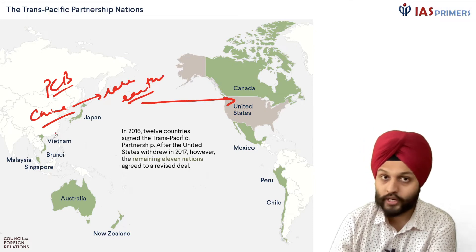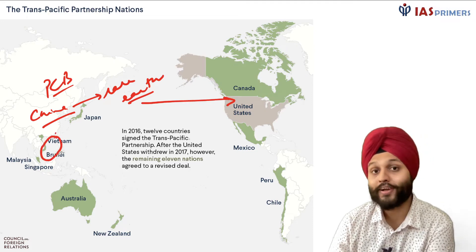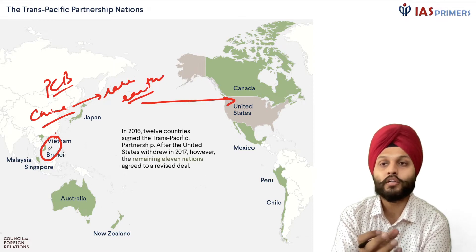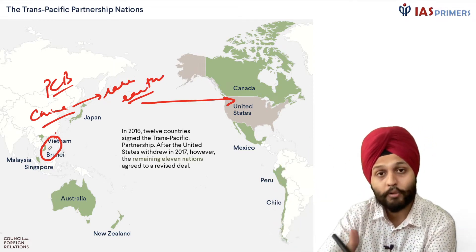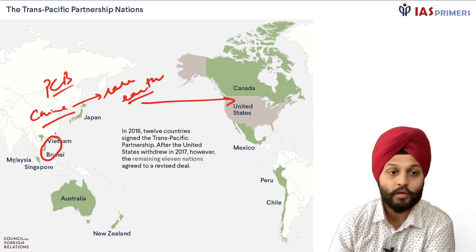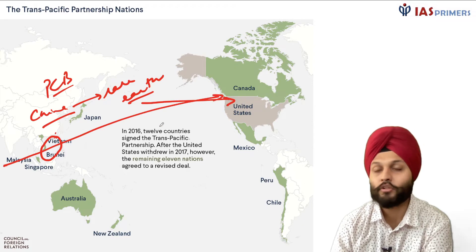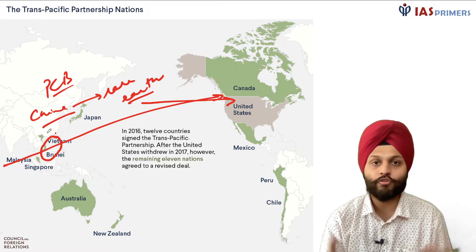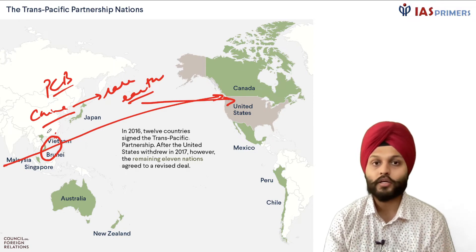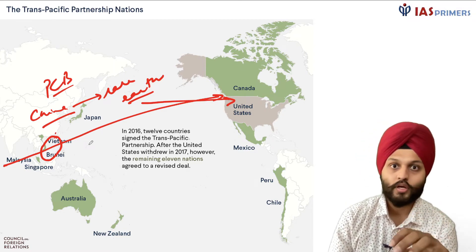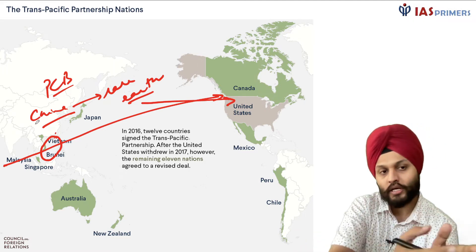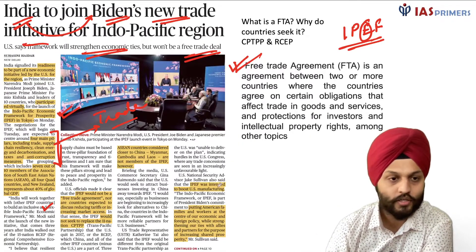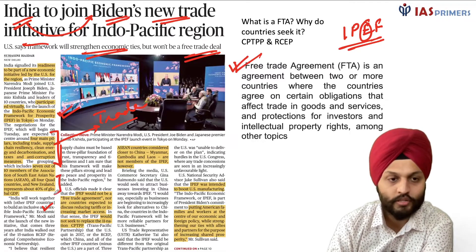We can also correlate this with China being more territorially assertive — for example, claiming the entire South China Sea based on a nine-dash line from an ancient map. If they control that area and block ships, it hampers free navigation of goods and trade — that is a supply chain issue. India has decided to join this IPEF initiative.